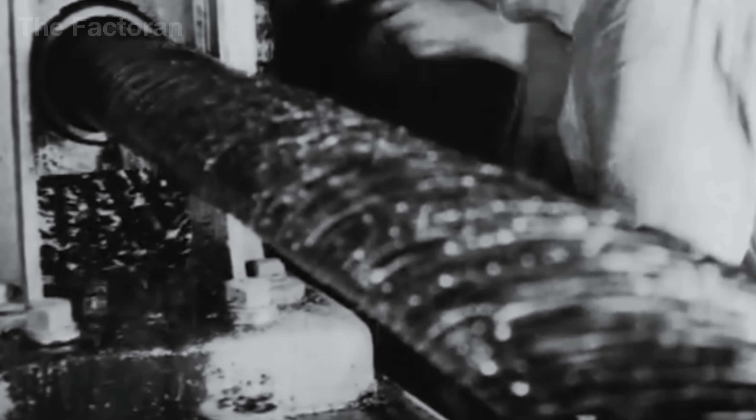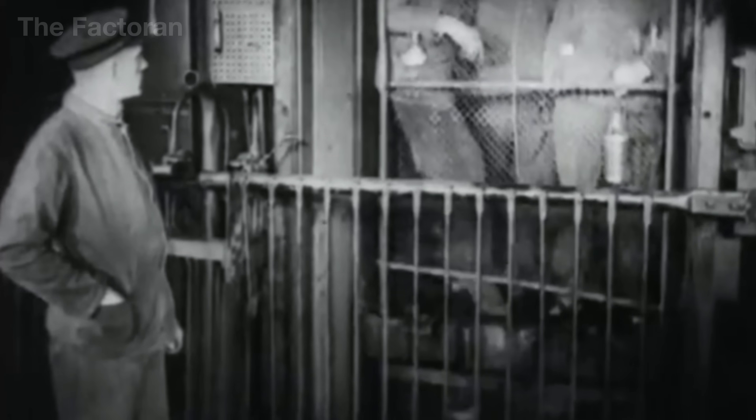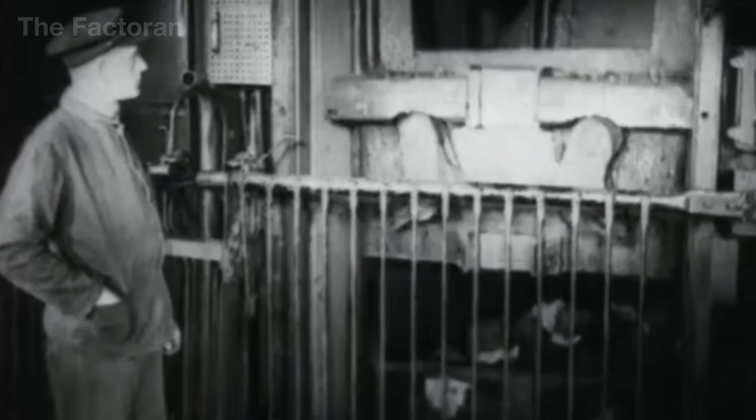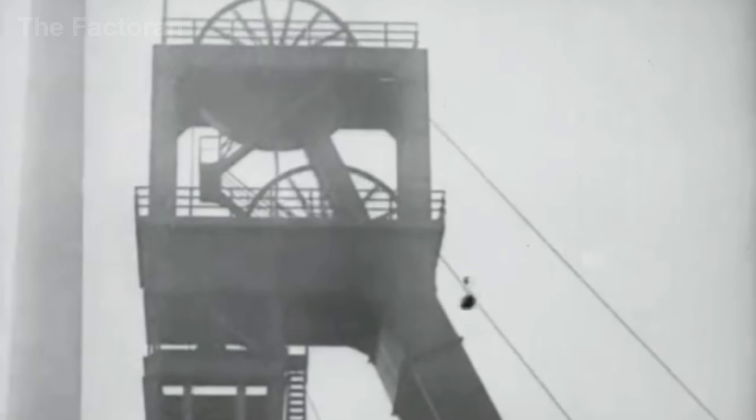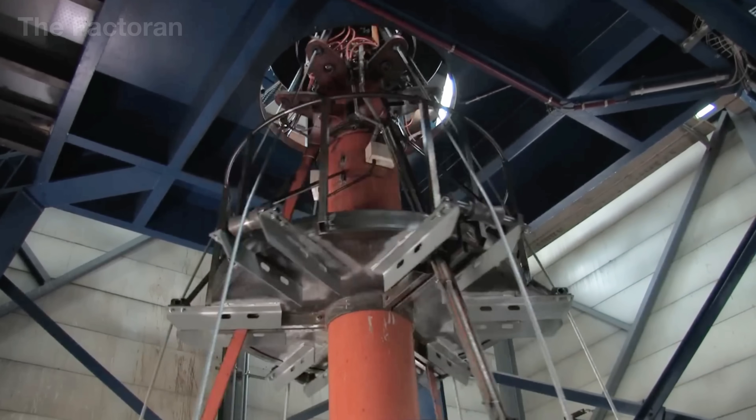Steel wire rope was born in the 1830s in the deep mines of Germany when hemp ropes could no longer handle the loads. By replacing the old material, mine hoists could descend hundreds of meters underground more safely, opening the way for large-scale industrial mining. Nearly two centuries later, this material has spread across every field.